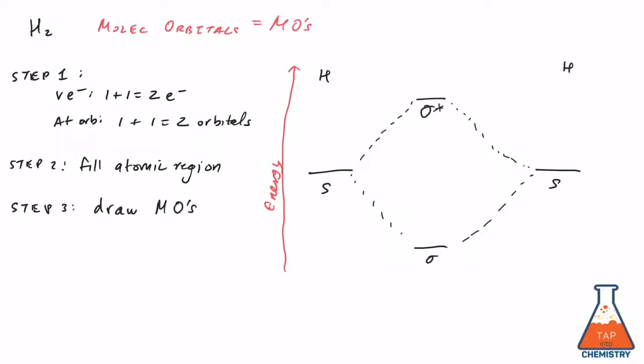Now, this is where we have reached our checkpoint. We need to make sure that the number of atomic orbitals is equal to the number of molecular orbitals before we continue. This is a simple example, and clearly we have two atomic orbitals and two molecular orbitals. But when you have molecules with many orbitals, this is a very important step.